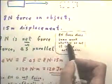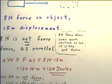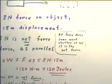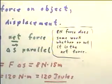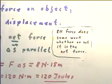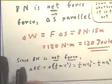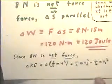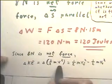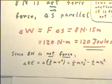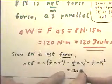Now, if 8 Newtons is the net force, and let's note very importantly, the 8 Newtons force does the same work whether or not it's the net force. We really don't care whether the 8 Newtons is the net force or not. That's how much work it does. But if it is the net force, and in this case we've assumed that it is, so since by assumption 8 Newtons is the net force here, then we're going to conclude that the change in the kinetic energy or the change in the one-half mv squared of the object is equal to that 120 joules. So this equals 120 joules.